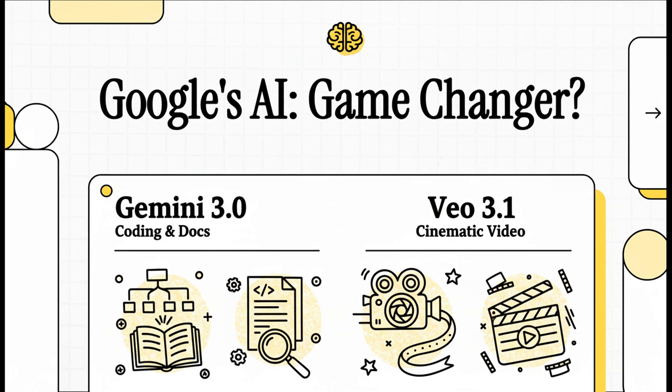Well, Google's rolling out some brand new AI tools, Gemini 3.0 and Veo 3.1, and they claim to fix these exact frustrations. So today, we're going to figure out if Google is just playing catch-up, or if this is actually a legit game-changer.